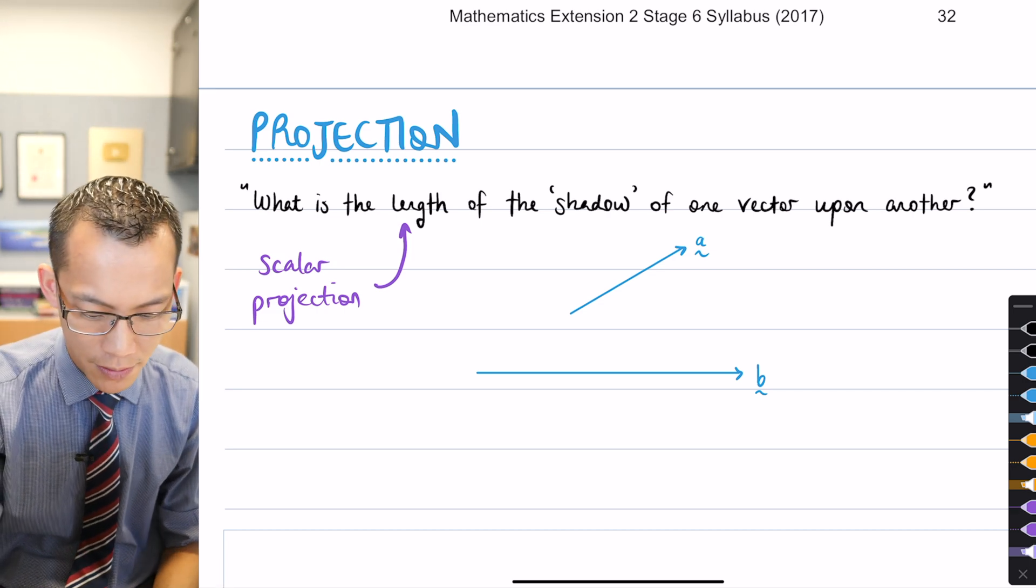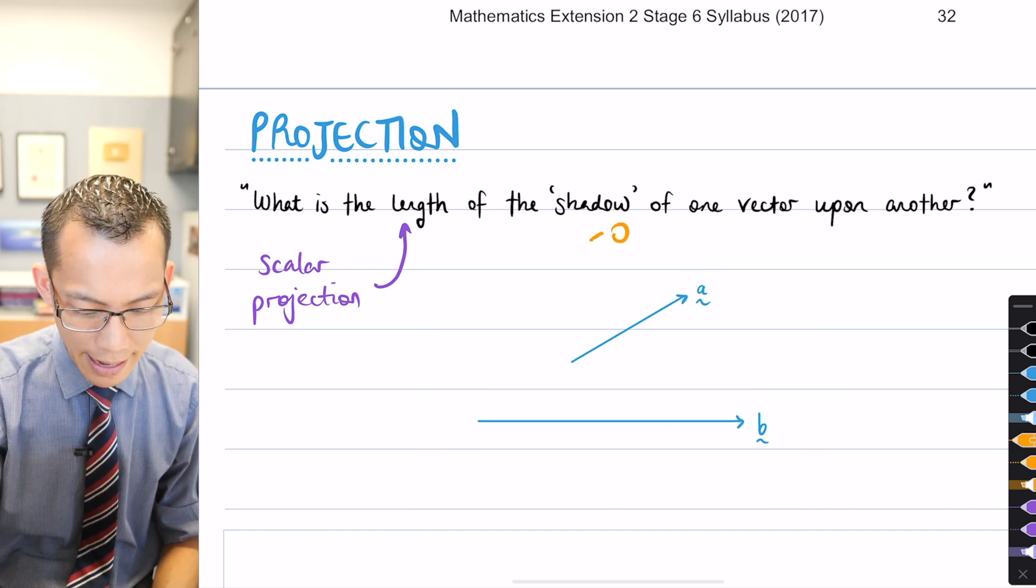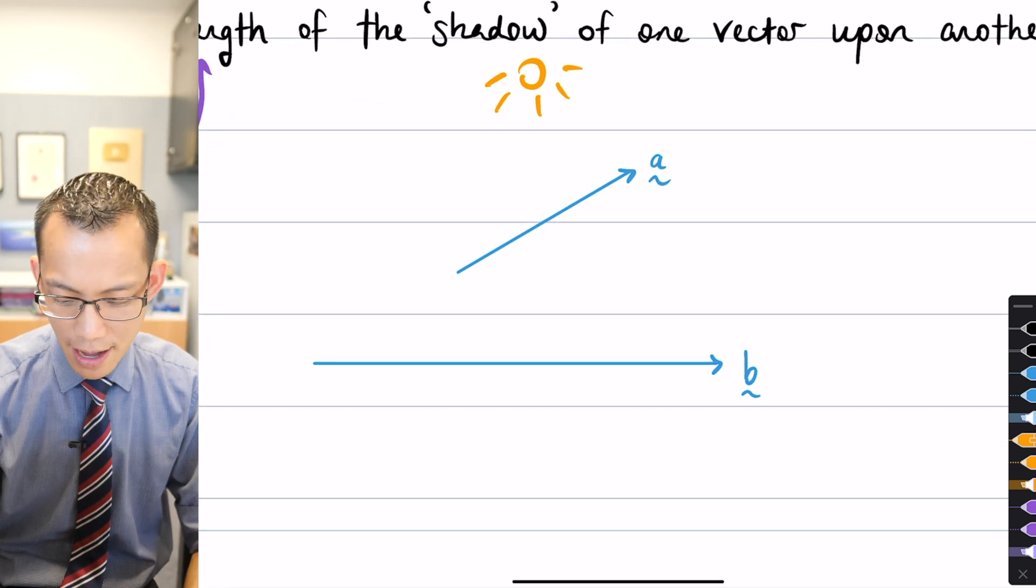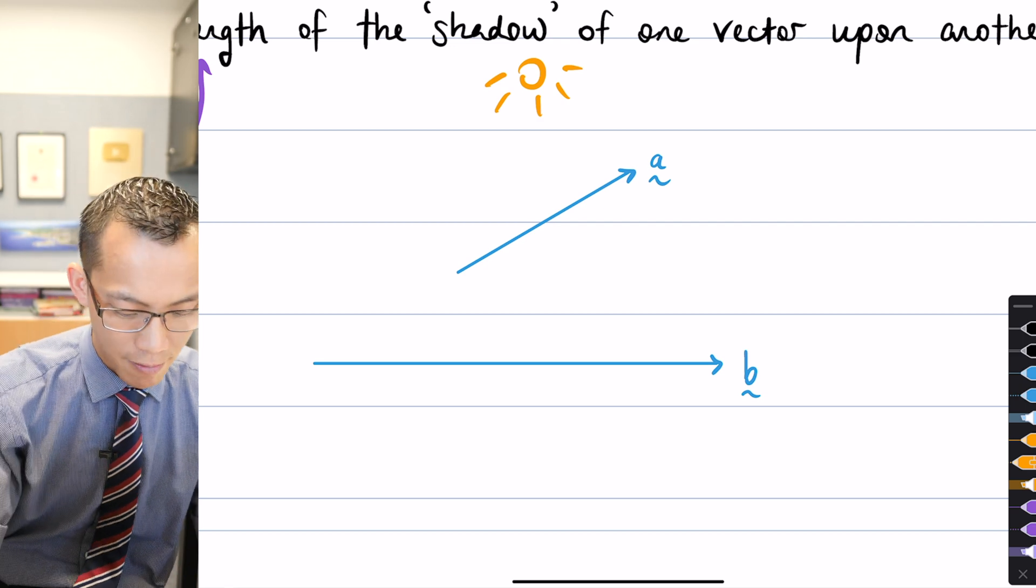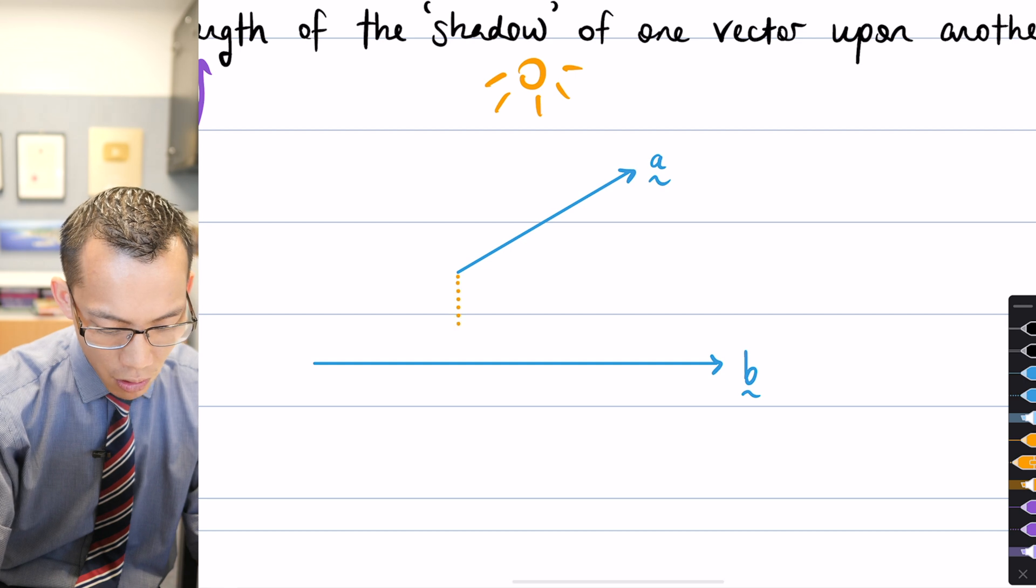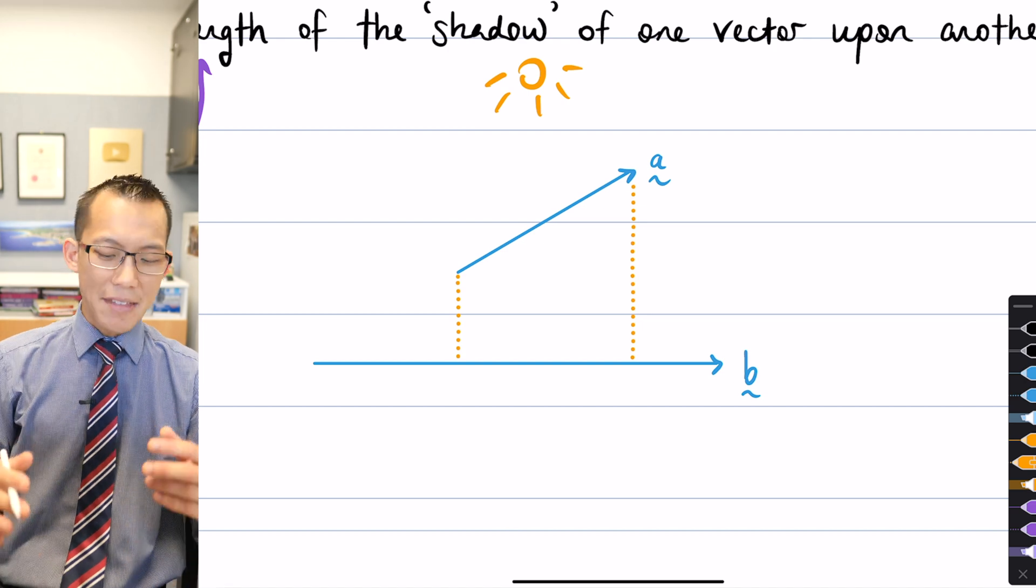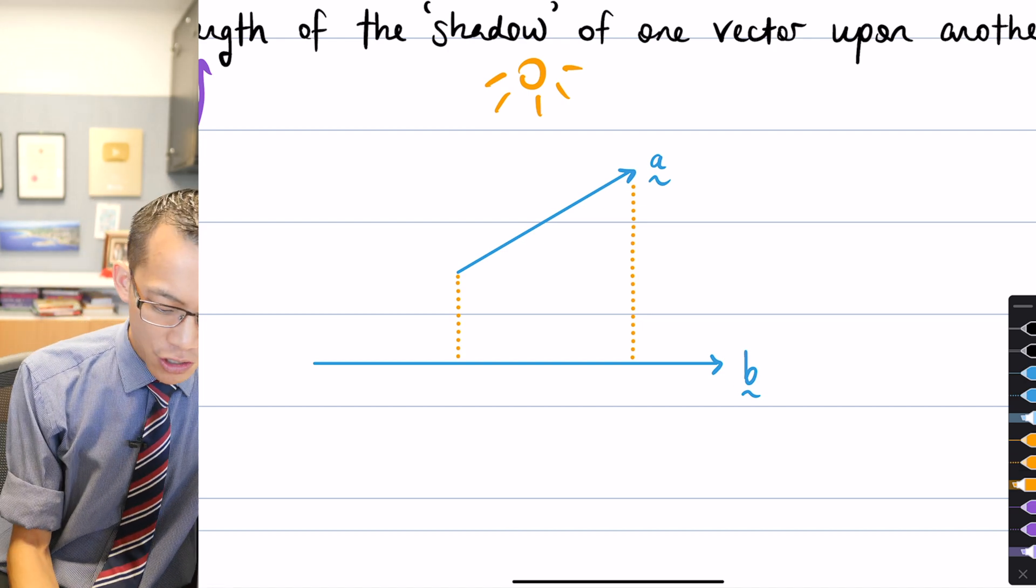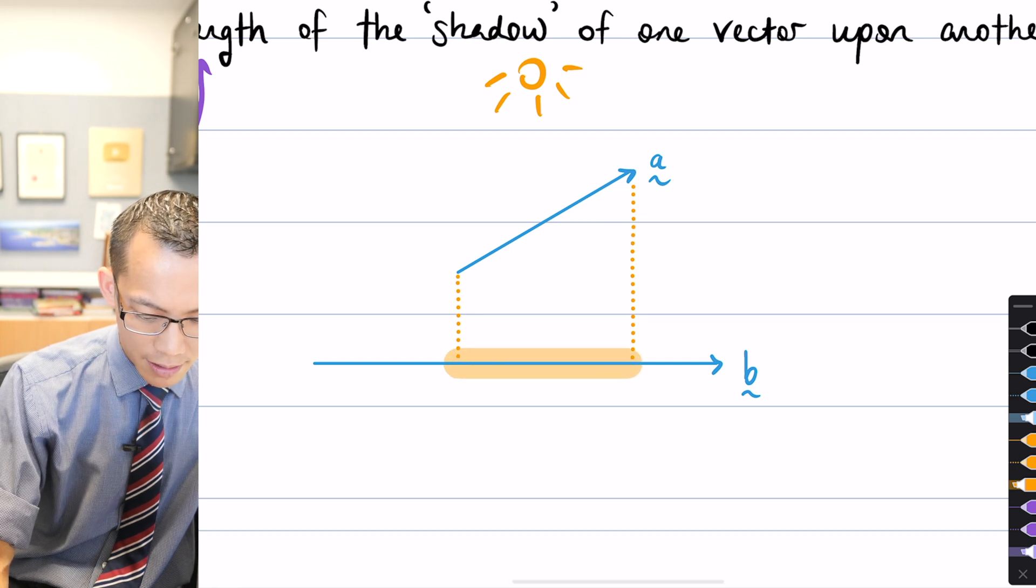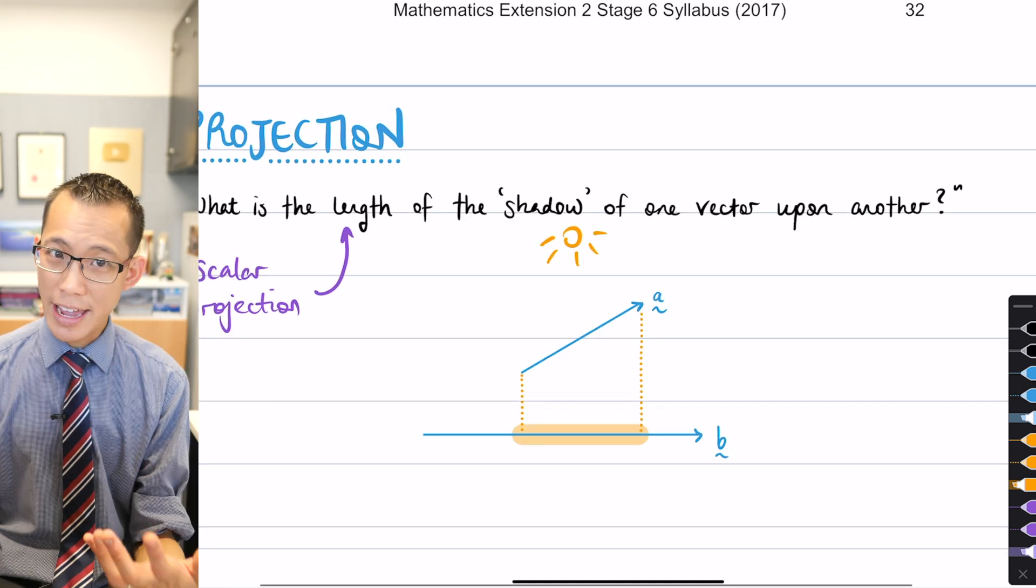So what I want you to imagine is maybe I'll move this down just a teeny bit. If you can imagine, you know, the sun hanging out here and it's shining down upon these two vectors and you can sort of, in fact, let's draw this on, right? You can imagine this top vector, A, casting a shadow onto this bottom vector, B, like so, right? Now what we're trying to work out is, hey, this shadow down, oh, that was a bit thicker than I intended, sorry. This shadow down here, there we go, it has a length. That length is what we call the scalar projection.